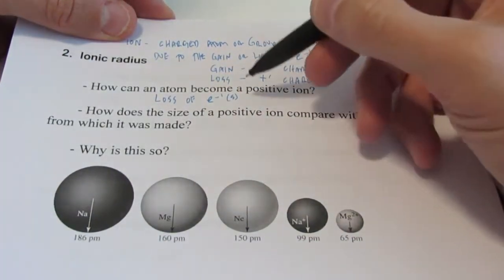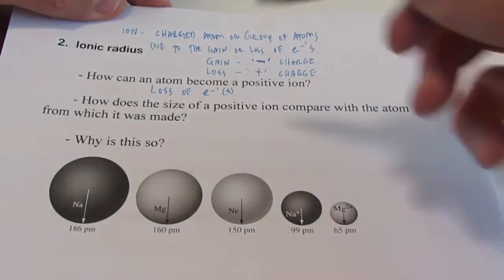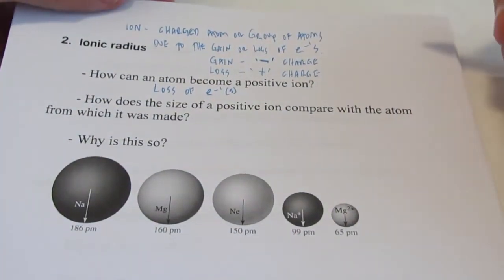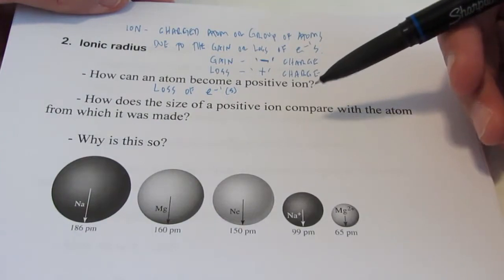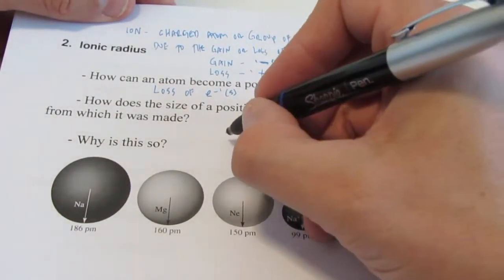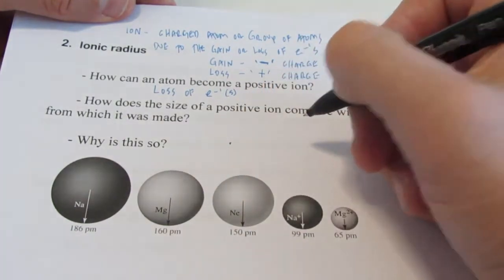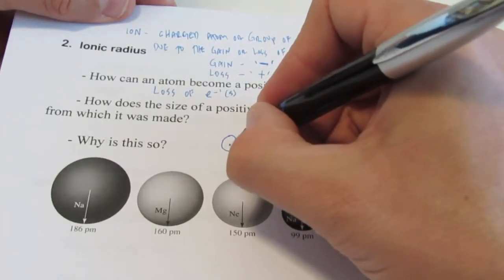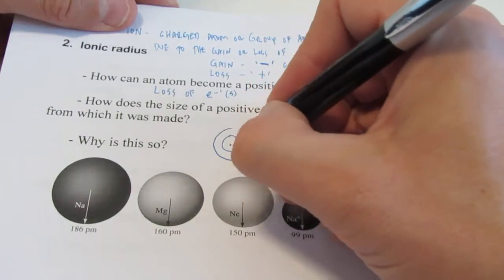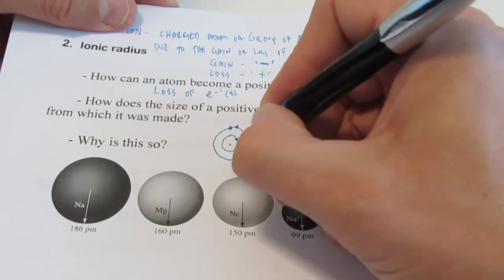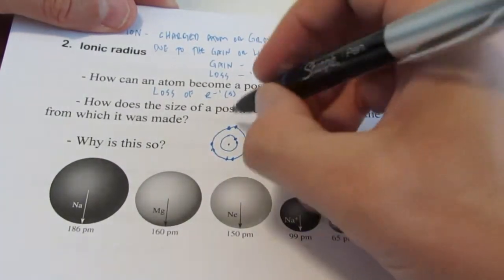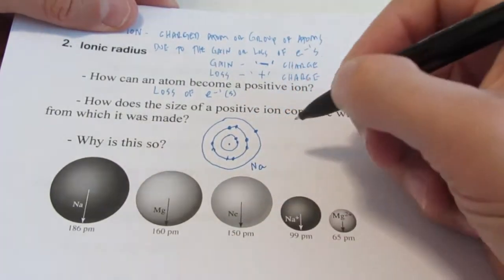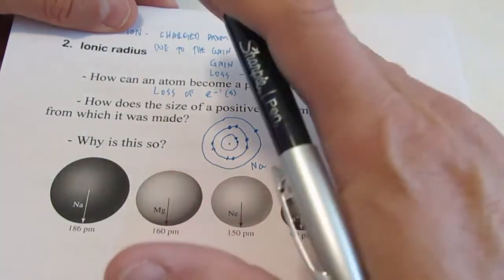That could be one electron or more than one electron. How does the size of a positive ion compare with the atom from which it was made? Let's pick on sodium. There's the nucleus of a sodium atom, and sodium has eleven electrons. Drawing a simple Bohr model: two electrons in the first energy level, eight electrons in the second energy level — a total of ten so far — so we need a third energy level with one electron. This is plain old sodium: eleven protons and eleven electrons, neutral.